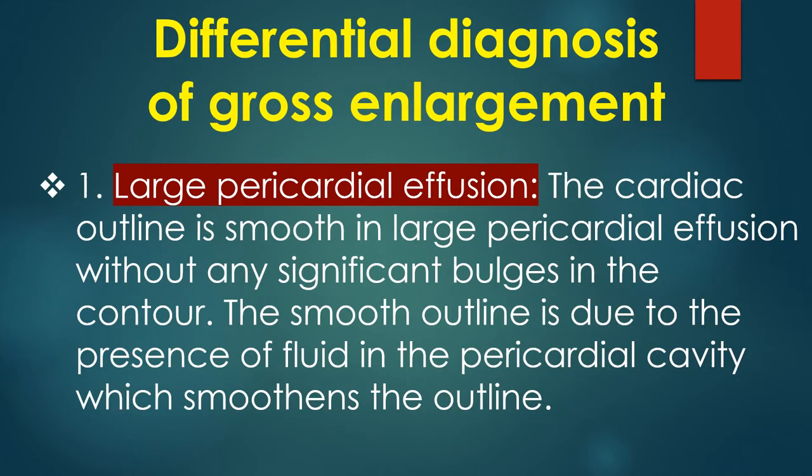Differential diagnosis of gross enlargement of cardiac size on X-ray: 1. Large pericardial effusion. The cardiac outline is smooth in a large pericardial effusion without any significant bulges in the contour. The smooth outline is due to the presence of fluid in the pericardial cavity which smoothens the outline.